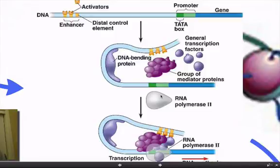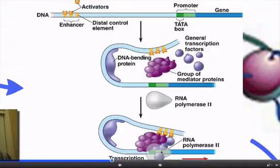Then you have these general transcription factors that will bond with the control elements, and that will trigger the entire process to begin. RNA polymerase will start running.